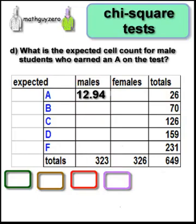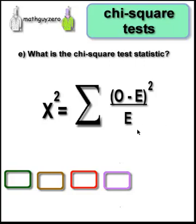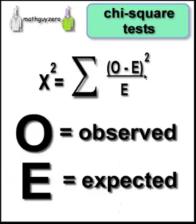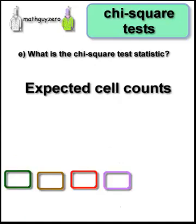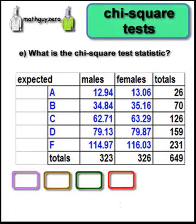We need to fill in all the cells because the last question asks for the chi-squared test statistic. For that, we need to figure out the expected cell counts for every cell using the formula. O is the observed — that's the data we already know. E is expected — those are the numbers we have to calculate. So let's repeat that process for all cells. Done.